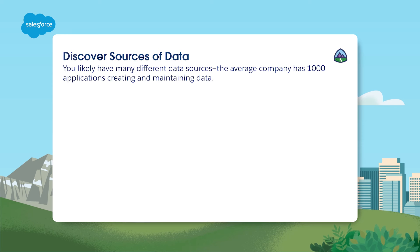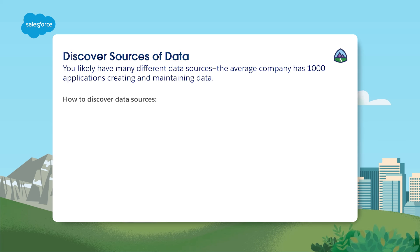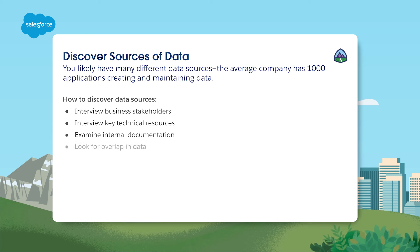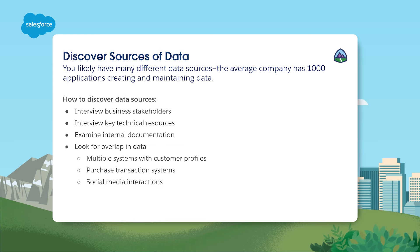With proper data ethics in mind, start identifying the sources of data needed for your Data Cloud requirements. Your company has a lot of data, and the only way to find the data that you need is to search for it. Here's how to discover sources relevant to what you want to accomplish with Data Cloud: interview business stakeholders and key technical resources, examine internal documentation, and look for overlap. There are likely multiple systems with customer profiles, which is very important for the future. You also want to look for multiple purchasing systems and systems producing and collecting social and media interactions.